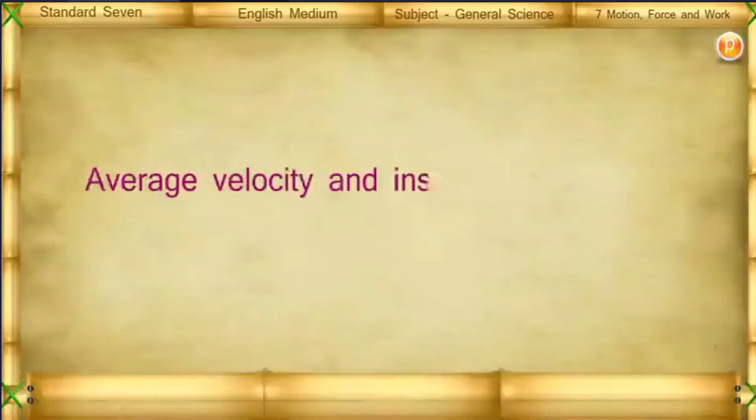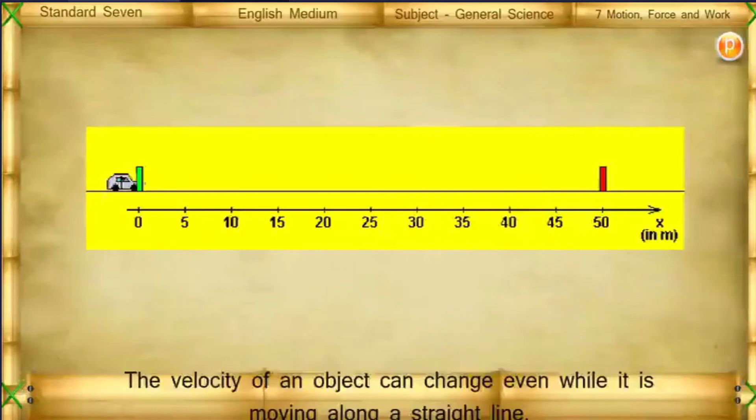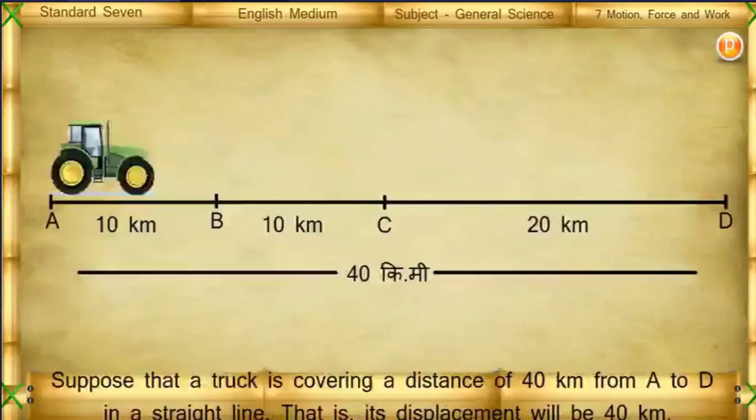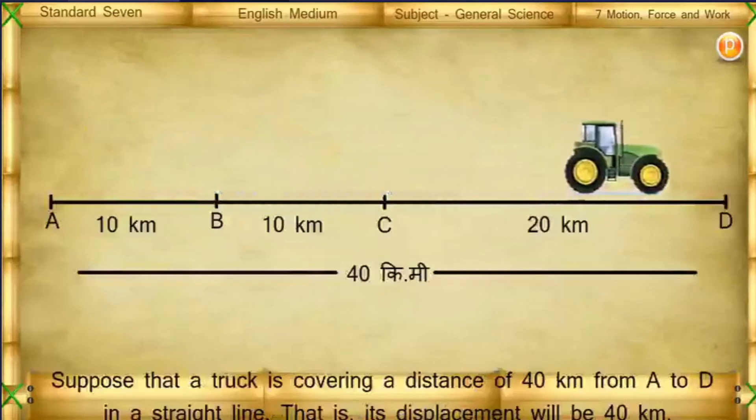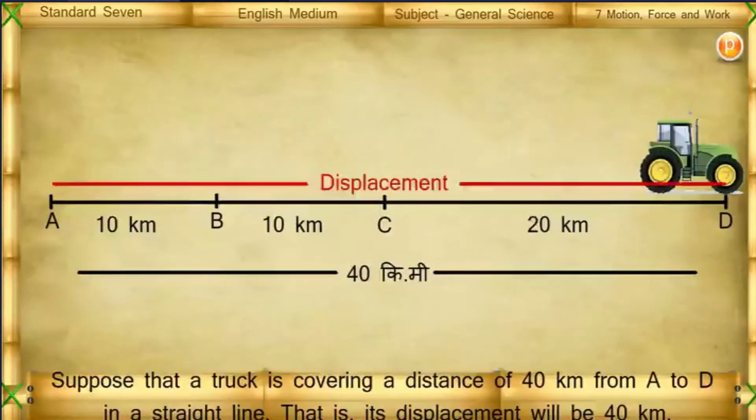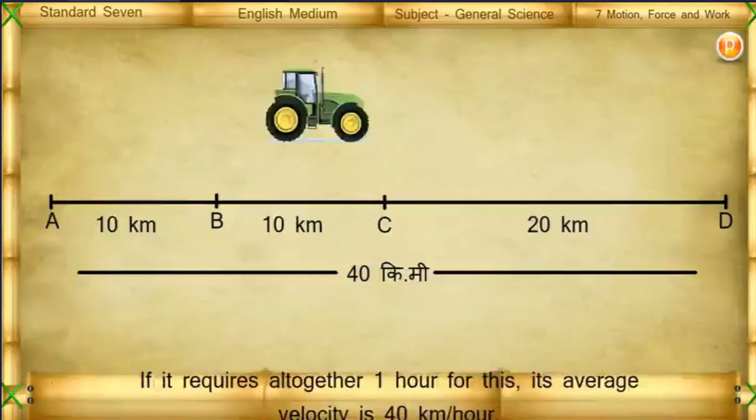Average velocity and instantaneous velocity. The velocity of an object can change even while it is moving alongside a straight line. Suppose that a truck is covering a distance of 40 kilometers from A to D in a straight line. That is, its displacement will be 40 kilometers. If it requires altogether one hour for this, its average velocity is 40 kilometers per hour.